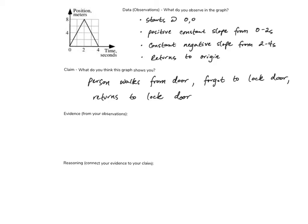Here is the example practice CER that we did for bellwork last week. First things first, I asked you to make observations — what did we observe in the graph? I focused on four main points. First, this object is starting at 0,0: at time equals 0, it's starting at the origin. Then from 0 to 2 seconds, we have a positive constant slope. Then from 2 to 4 seconds, we have a constant negative slope. And finally, at time equals 4 seconds, the endpoint of the graph, we're ending at the origin again.